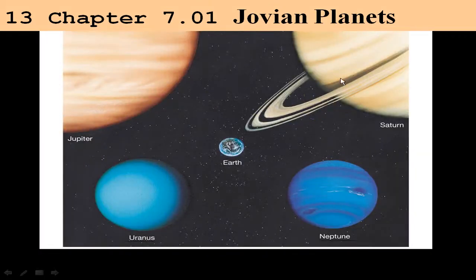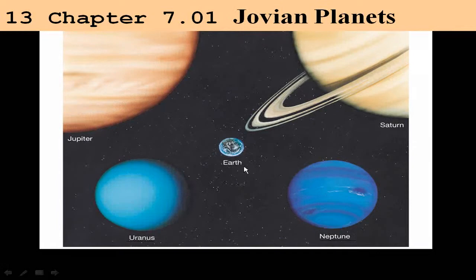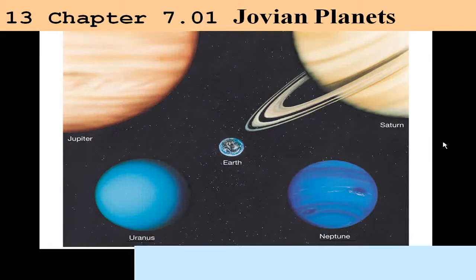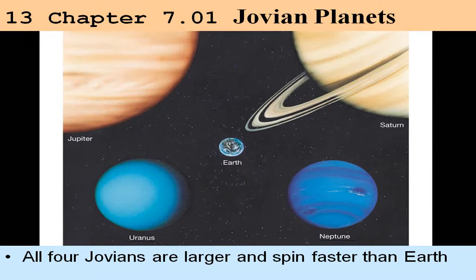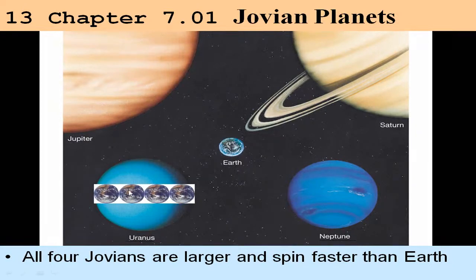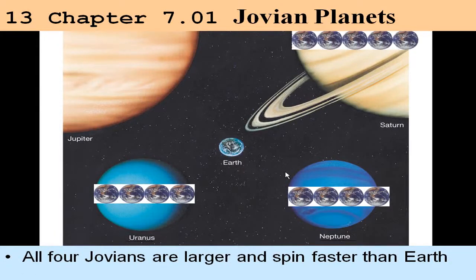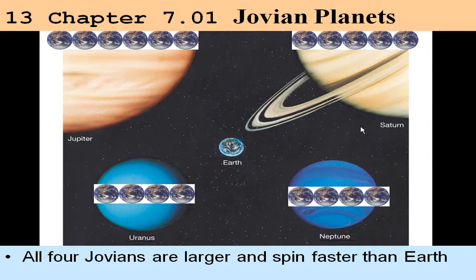Before we get there, let's compare the Jovian planets again to the size of the Earth. Here are the relative sizes of the four Jovian planets in relation to the Earth. All four are larger than the Earth and all four spin faster than the Earth. Jupiter and Saturn spin on the order of 10 hours on their axis, and Uranus and Neptune on the order of 16 or 17 hours. Uranus and Neptune are about four Earths in diameter. Saturn is almost 10 Earths in diameter, so its radius is about five. Jupiter is about 11 Earths in diameter, so its radius is about five and a half.